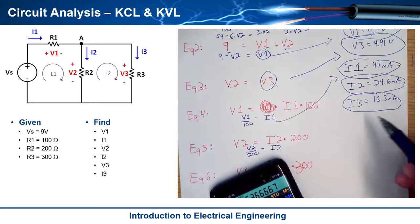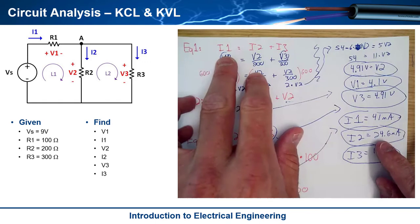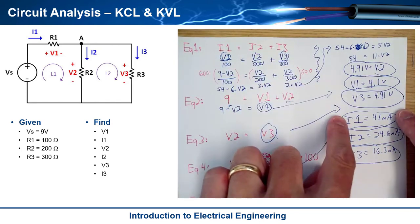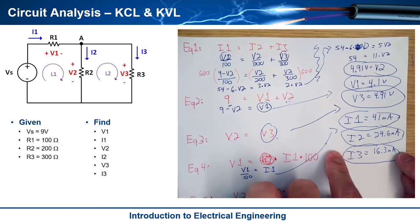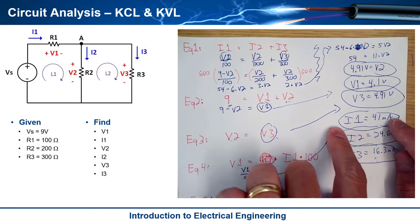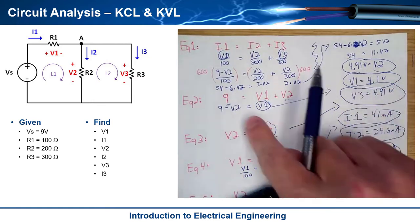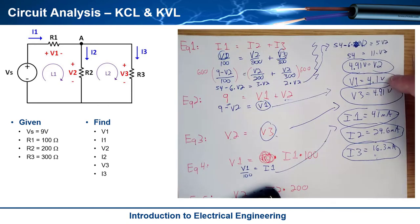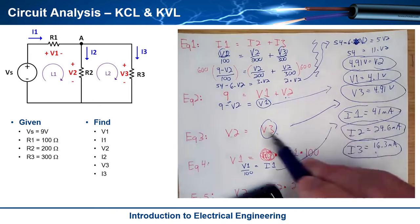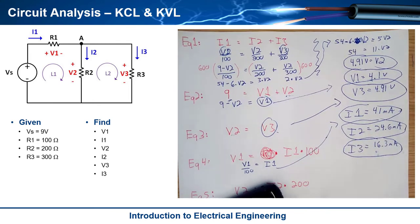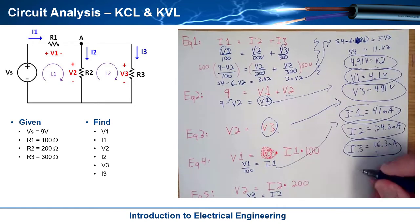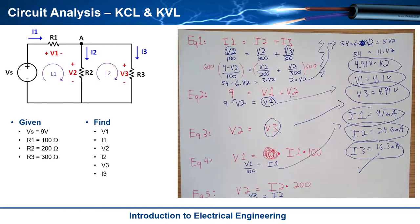Quick sanity check: does I1 = I2 + I3? We have 24.6 + 16.3 = 40.9 ≈ 41 mA — checks out. Does 9 = V1 + V2? 4.1 + 4.9 = 9 volts — yes. Does V2 = V3? Yes. KCL and KVL hold throughout. That took about 13 minutes but it's done.